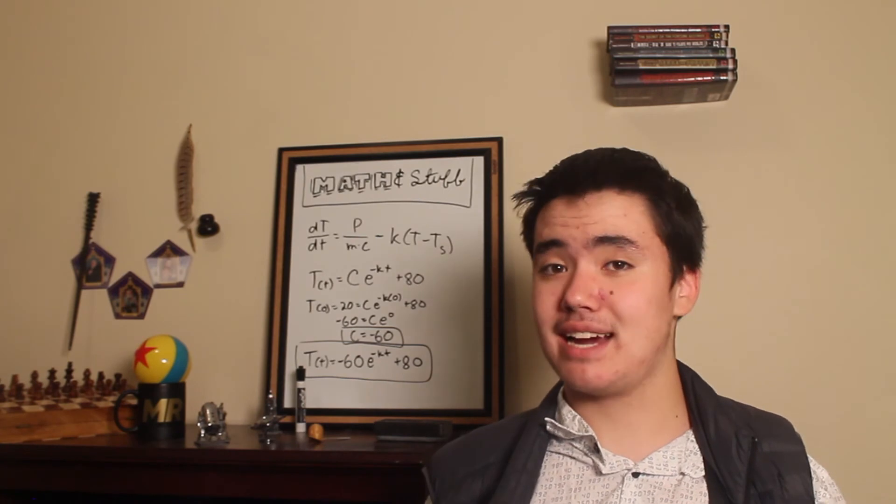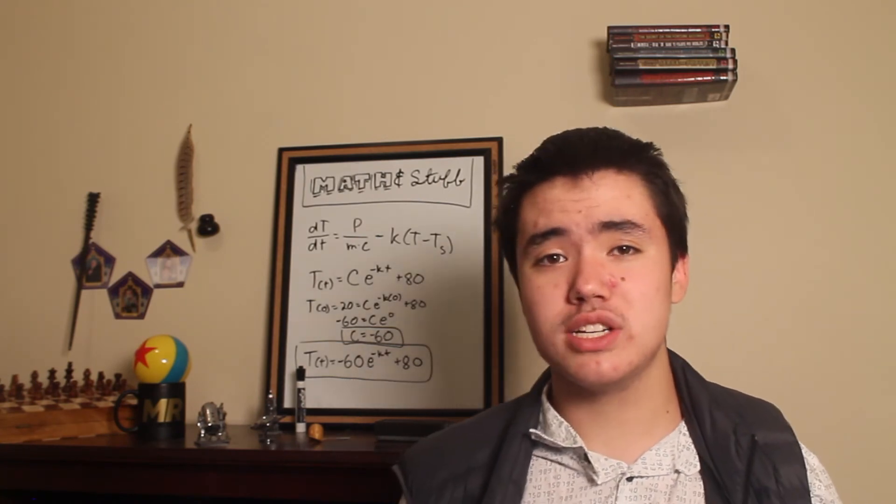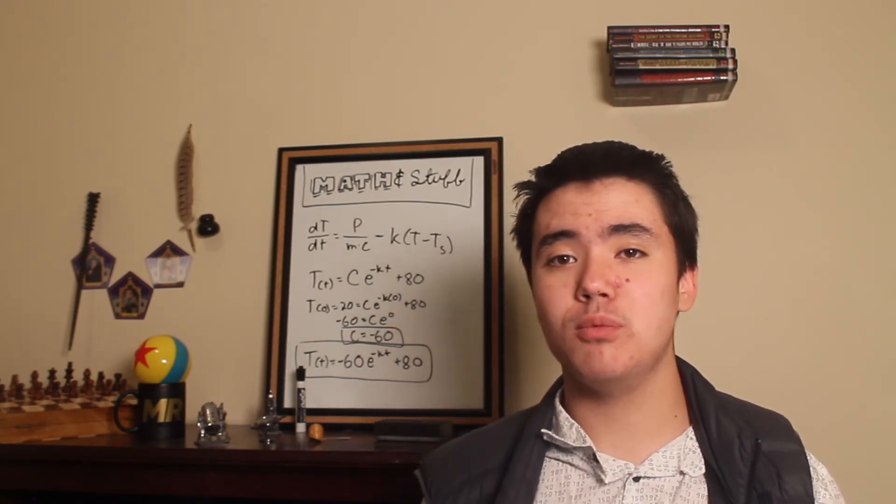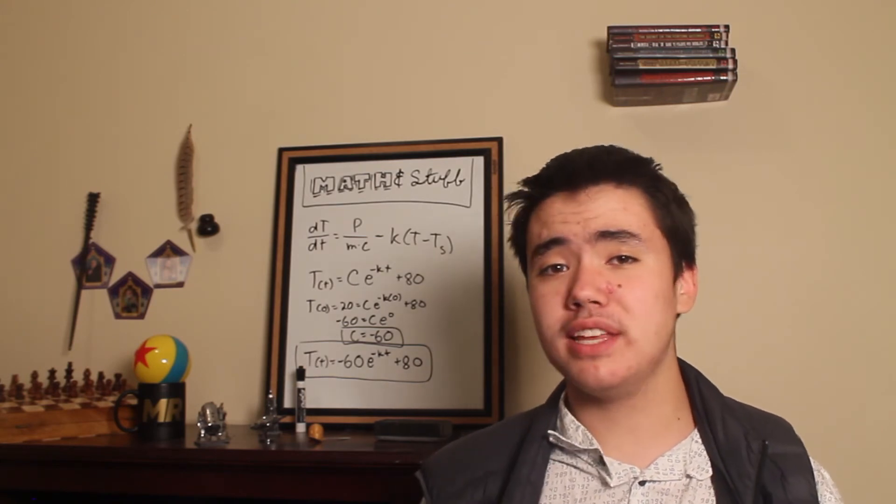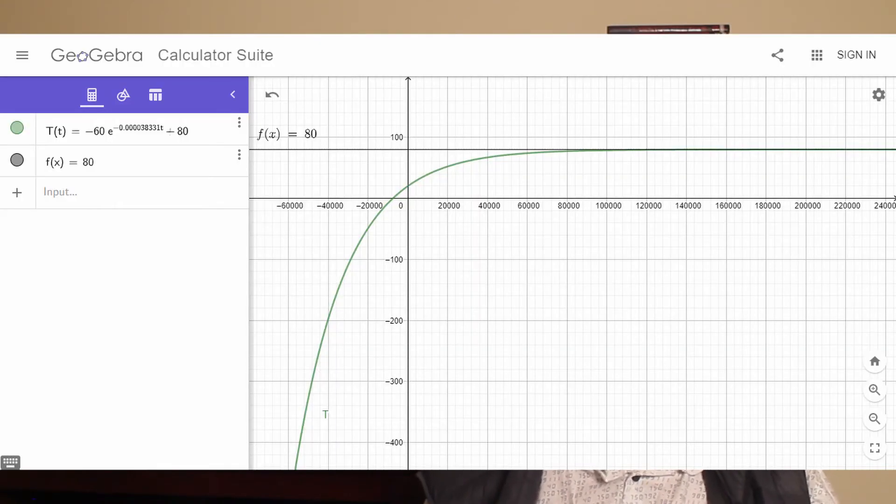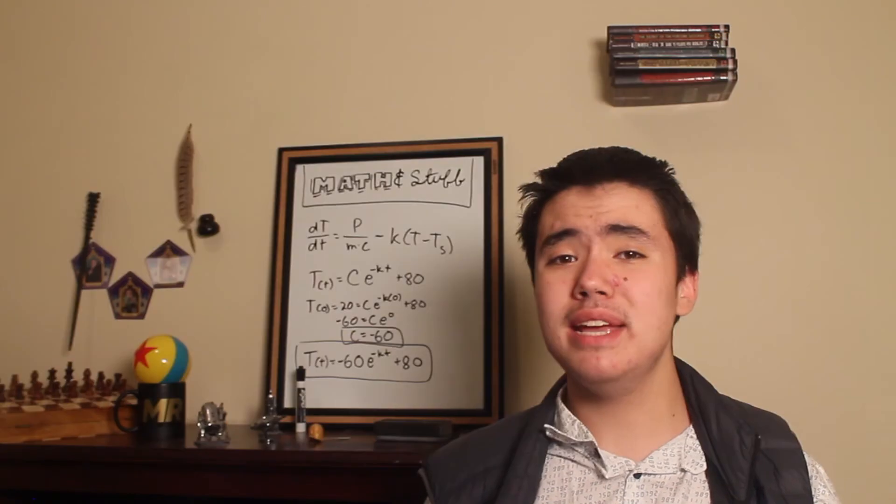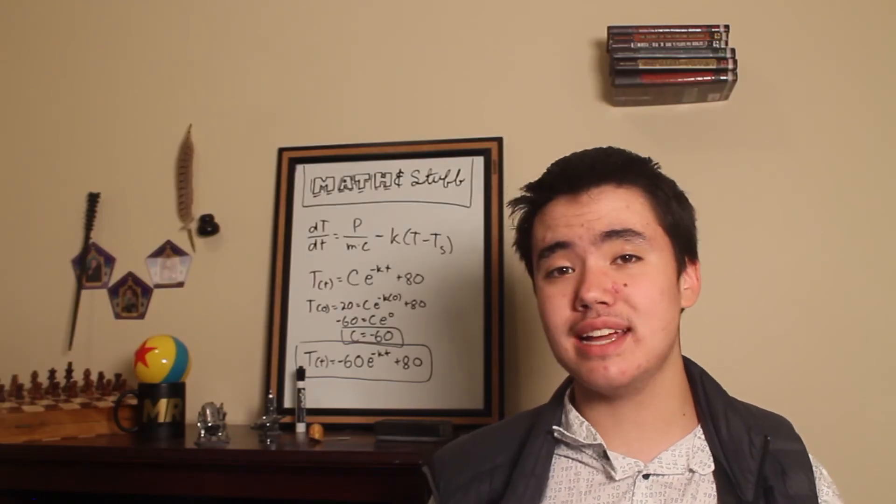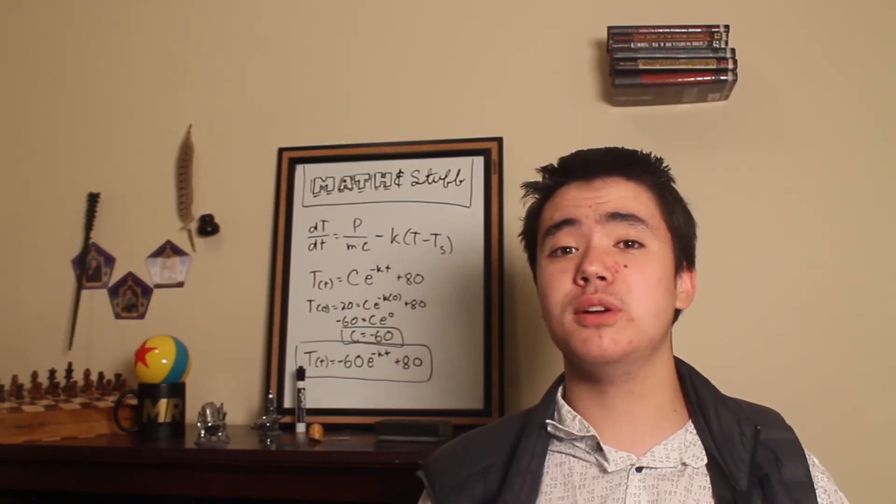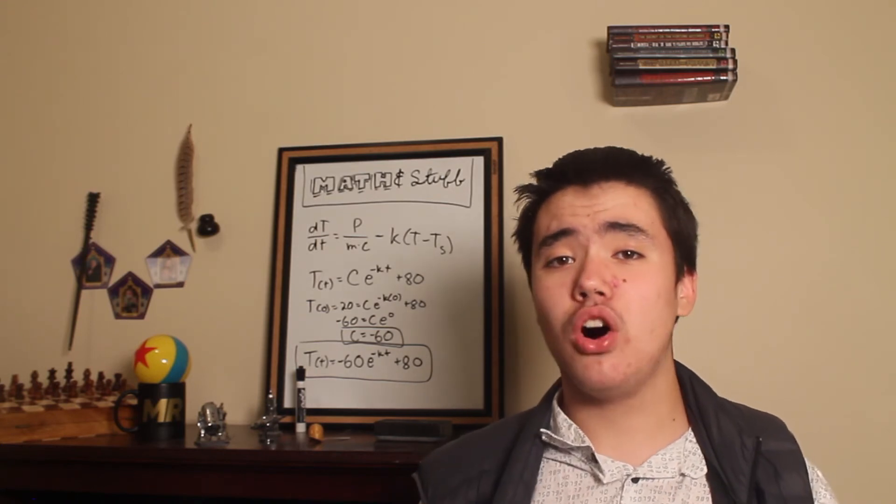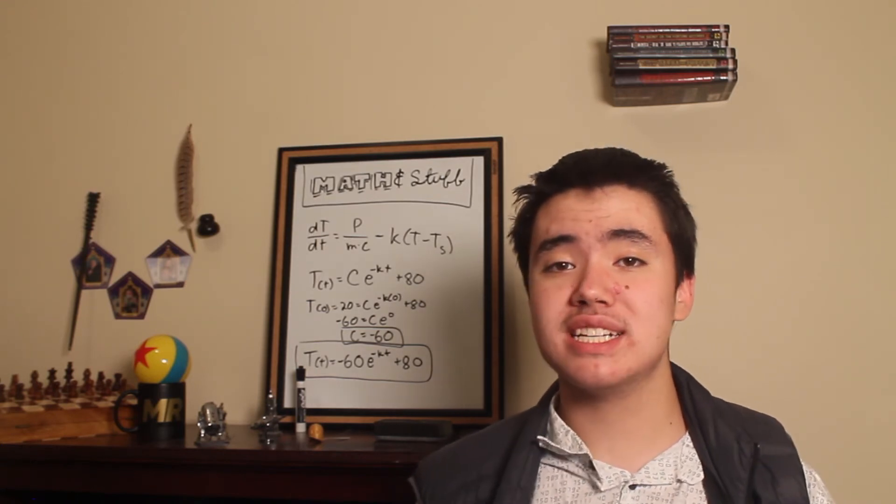Well, not exactly. If we integrate our equation to get the temperature at any given time, we can see that it's an exponential equation. And when we graph the equation, it has a horizontal asymptote at 80 degrees Celsius, meaning that we will get infinitely close to 80 degrees Celsius, but never really reach that. However, all you'll need is one more person to tip it over the edge.